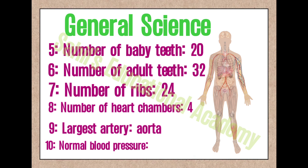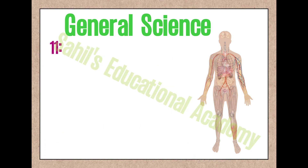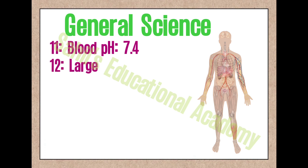10. Normal blood pressure: 120/80 mmHg. 11. Blood pH: 7.4. 12. Largest organ: skin.